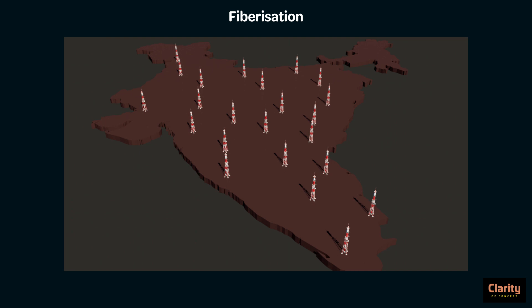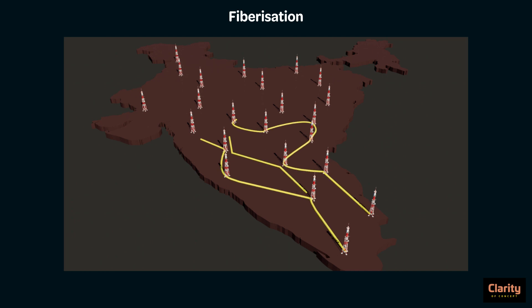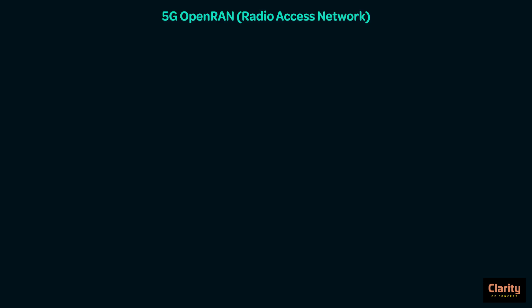The second term is Fiberization. There are many towers in the country, and connecting these towers through underground optical fibers is called Fiberization. India has only 33% of its towers connected like this, while the US, Japan, and China have 80 to 90% fiberized. This makes the communication backbone stronger.